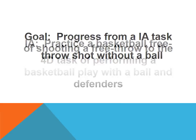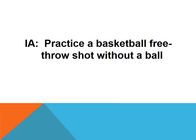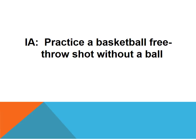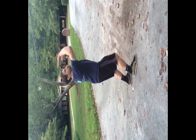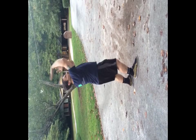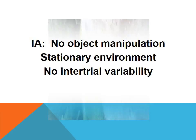Starting with a 1A task: stand in place and practice shooting a basketball free throw without a ball. This is a 1A task because there is no object manipulation, the performer and environment are stationary, and there is no inter-trial variability.